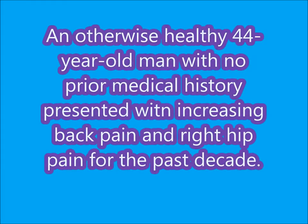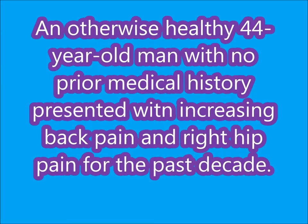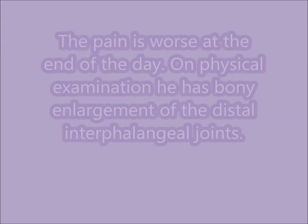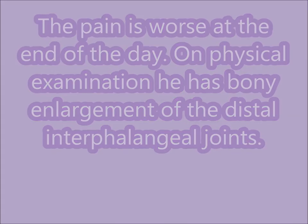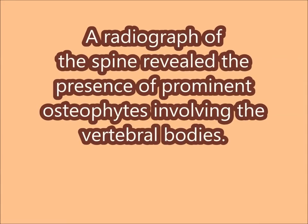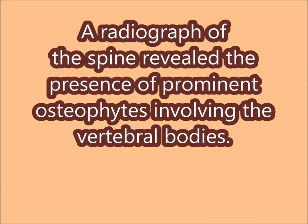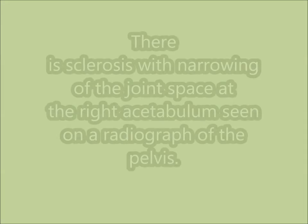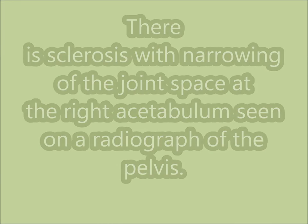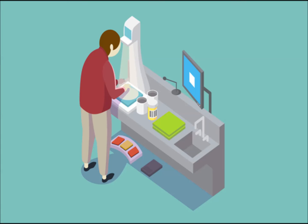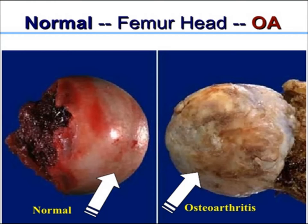An otherwise healthy 44-year-old man with no prior medical history presented with increasing back pain and hip pain. The pain is worse at the end of the day. On physical examination, he has bony enlargement of the distal interphalangeal joints. A radiograph of the spine reveals the presence of prominent osteophytes involving the vertebral bodies, and there is sclerosis with narrowing of the joint space at the right acetabulum seen on a radiograph. On gross examination of the femur head, there is roughening and cracks in the articular cartilage.